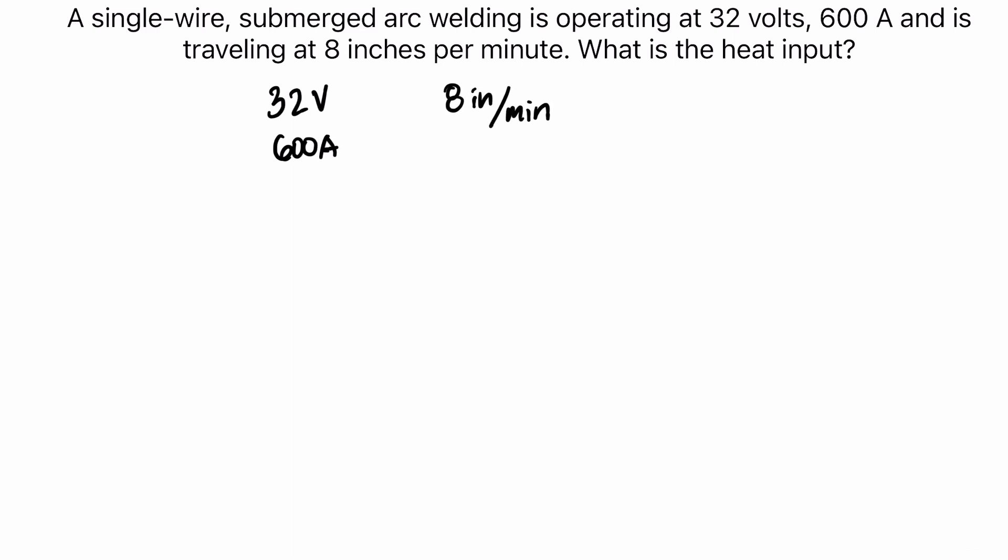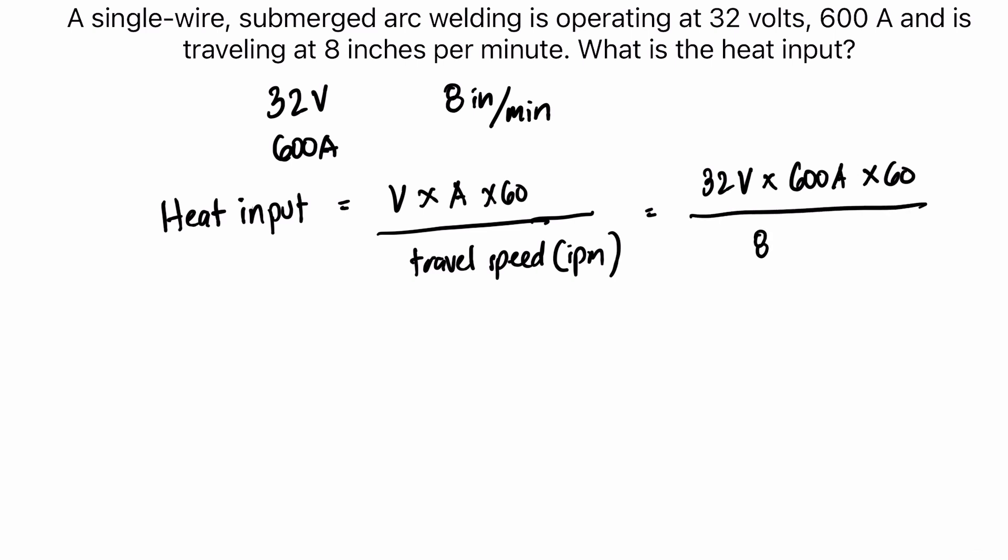So using the formula of the heat input, V or the voltage times the current times 60 over the travel speed in inches per minute. So that is 32 volts times 600 amperes times 60 over 8 inches per minute. So that will give you an answer of joules per inch. 32 times 600 times 60 over 8, that will give you an answer of 144,000 joules per inch.